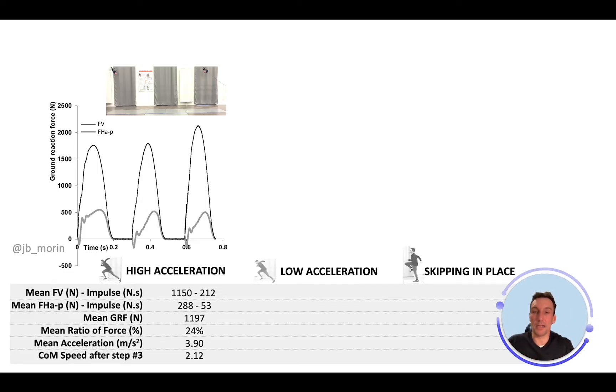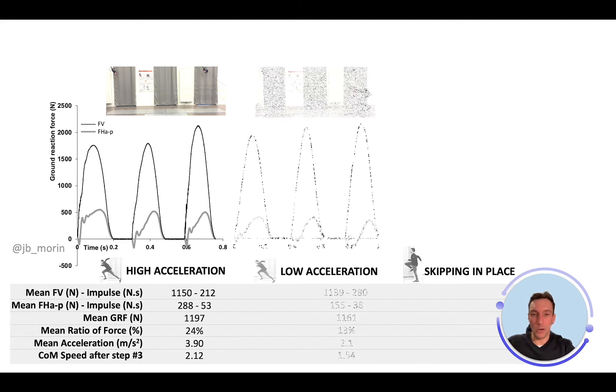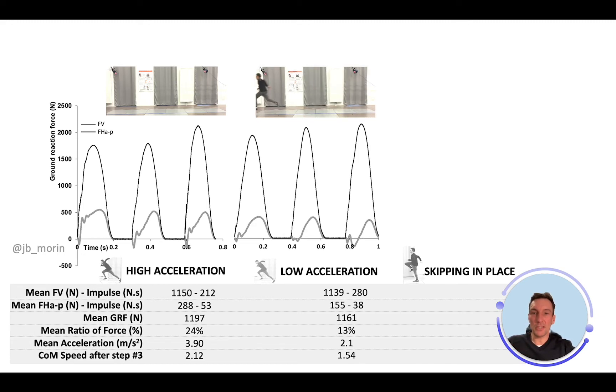Now let's see the lower performance run during low performance acceleration. I'm accelerating forward but with much less performance. The final speed after step three is 1.5, much lower. My average acceleration is much lower. The ratio of force is much lower, meaning my overall push was more vertically oriented. I have less horizontal force, much less horizontal impulse.